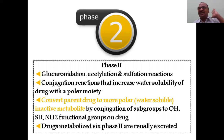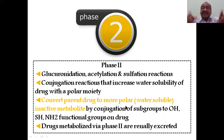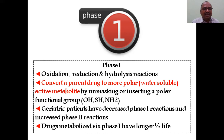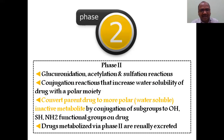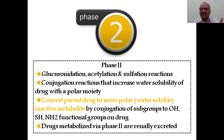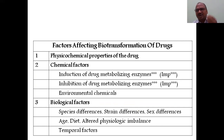Phase 2 reactions — glucuronidation, acetylation, sulfation, and conjugation — convert the parent drug molecule into a more polar inactive metabolite. Groups involved include -OH, -SH, -NH2, and sulfate groups. Drugs metabolized via Phase 2 are renally excreted because they become more hydrophilic in nature.